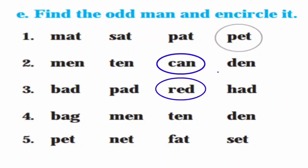Question number four: Bag, Men, Ten, Den. Bag ya shabdacha uchchar vegla ahe aani Men, Ten, Den ya shabdancha uchchar sarkha. Manu odd man out: Bag. Question number five: Pet, Net, Fat, Set. Pet, Net, aani Set ya tini shabdancha uchchar sarkha.